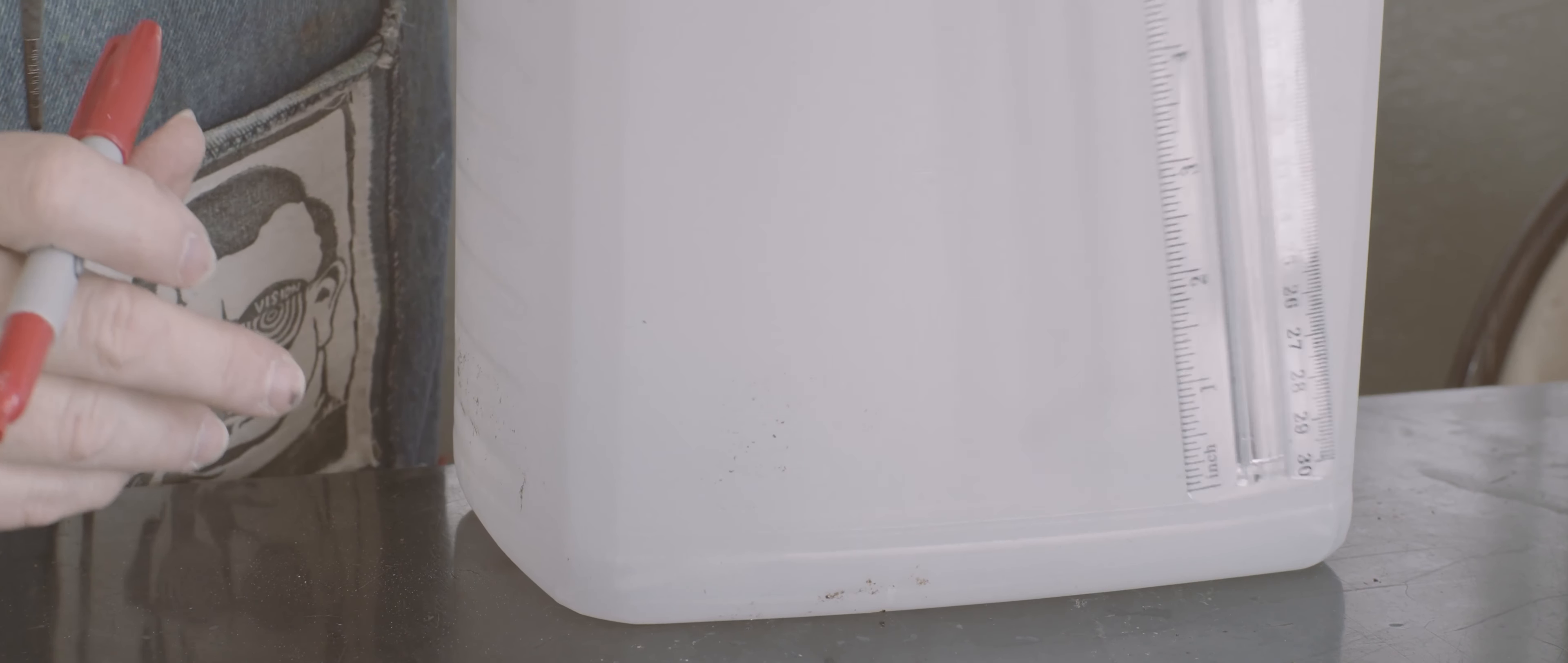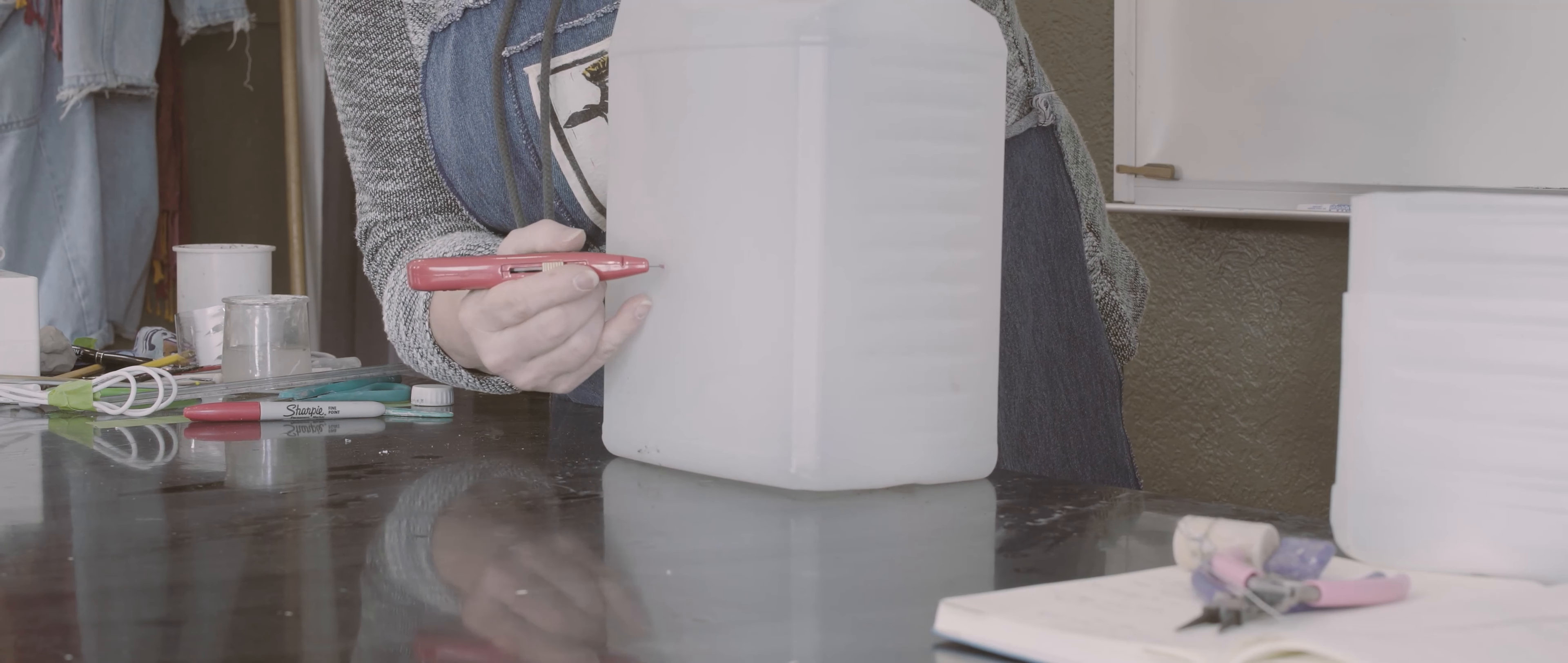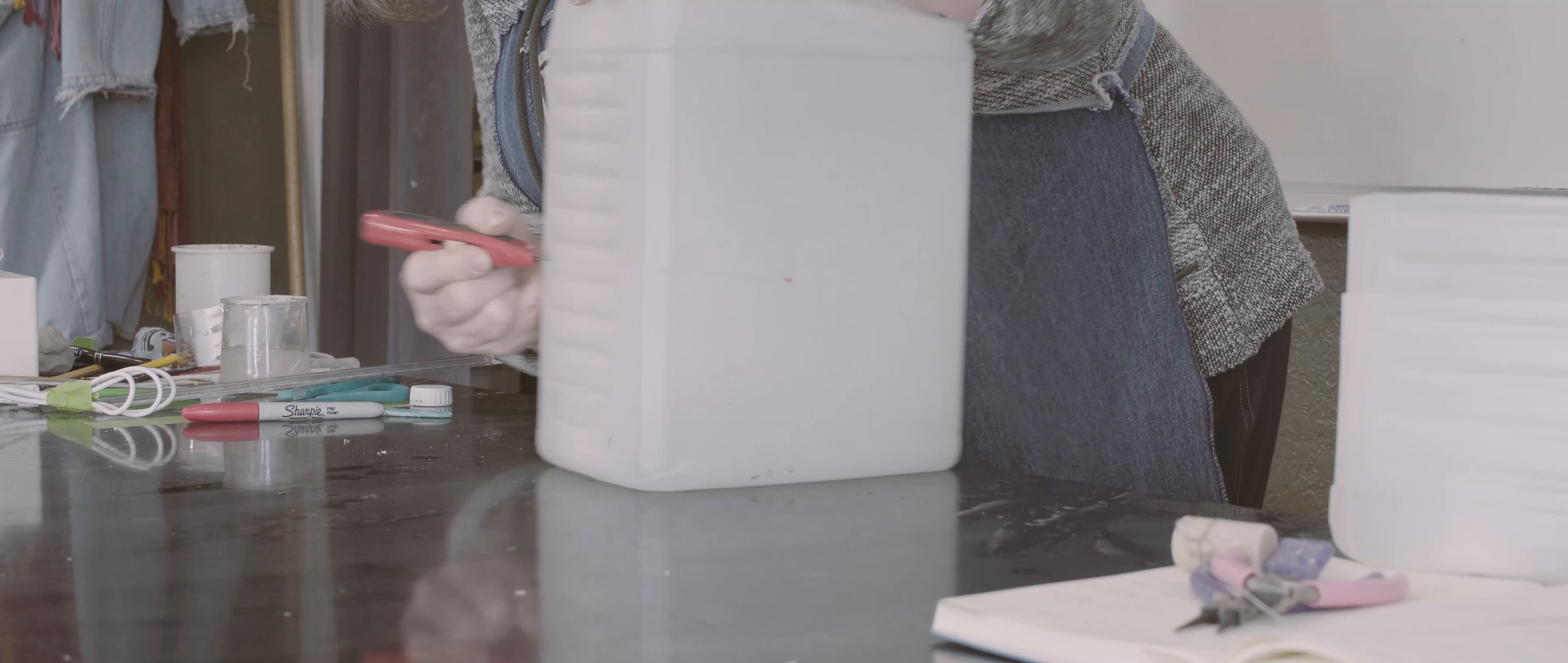The way we do that is pretty fast and easy. Every bucket is shaped differently, but for this one I tested it out, and like four and a quarter is a good height for the base. Your mileage may differ depending on who makes your cat litter.